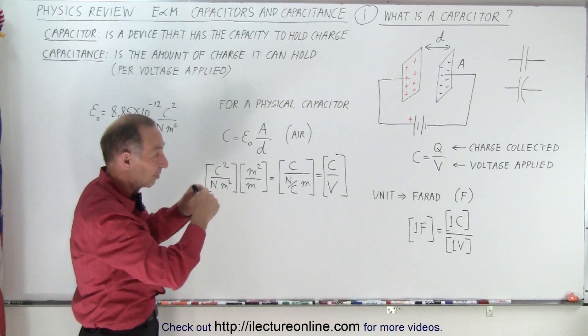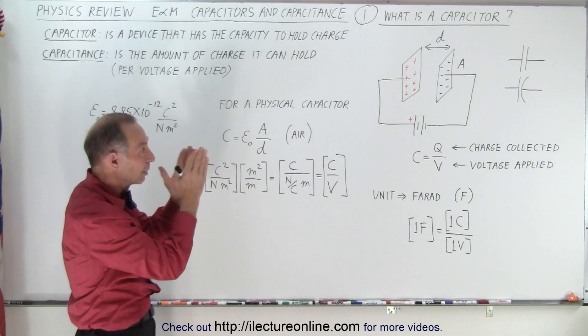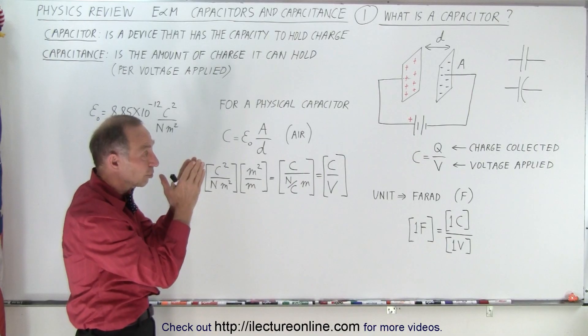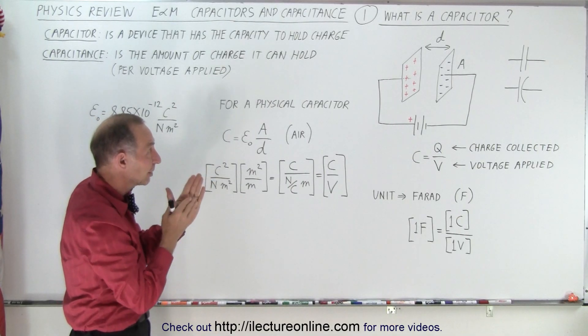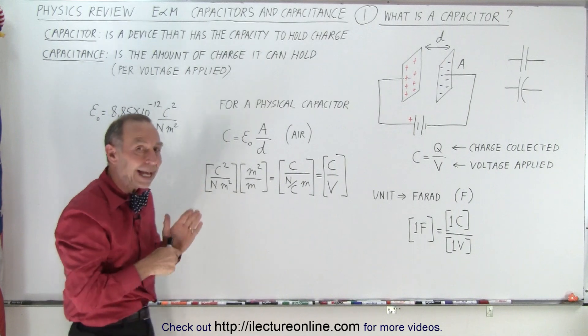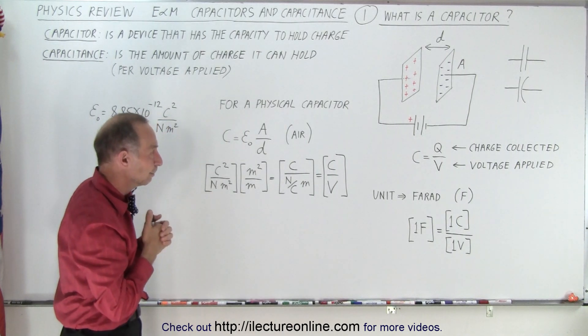But essentially it is if you then unroll them you end up with two metal, sometimes just foil, metal plates that are very close together and also sometimes what we'll call a dielectric in between. We'll talk about dielectric a little bit more later.